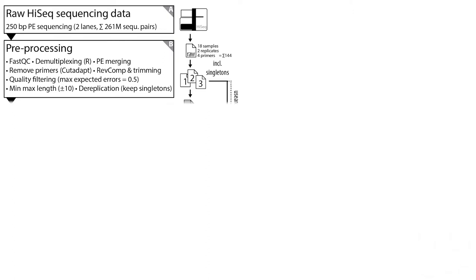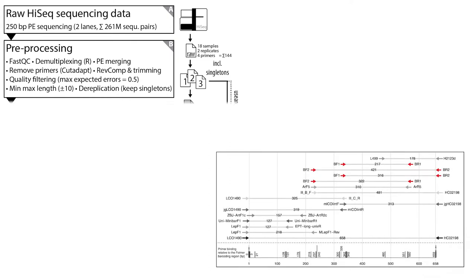After sequencing and a quick quality control, reads were demultiplexed and pre-processed for clustering. This included paired-end merging, removing primers, and trimming all amplicons to the same 217 base pair length to ensure comparability between different primers. Reads were quality filtered using a maximum expected error score of 0.5, as implemented in uSearch, and reads longer or shorter than the expected length were discarded.